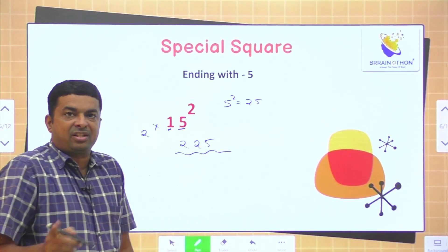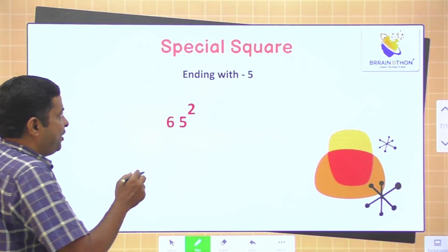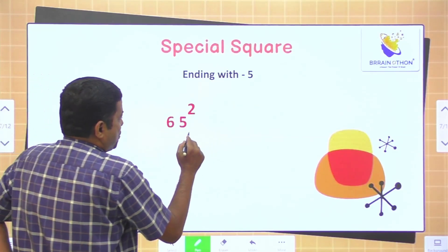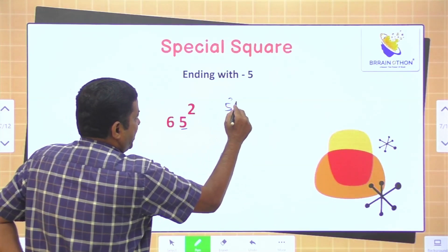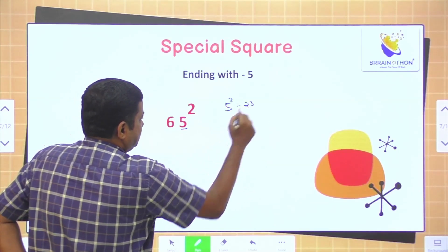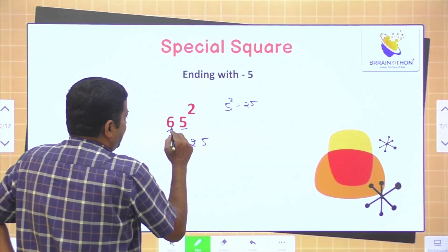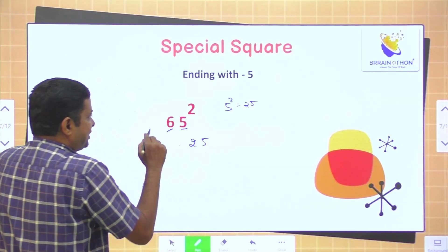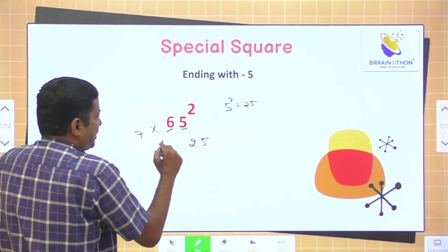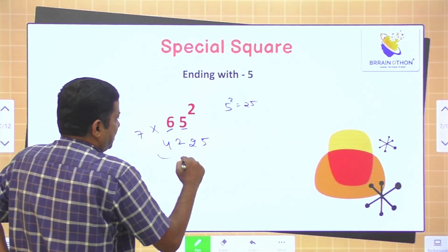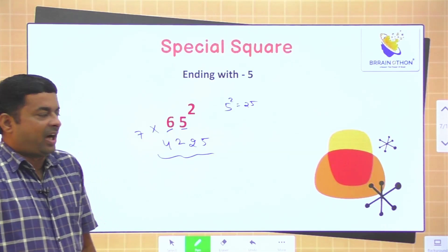This is how fast you can find a square. We have one more sum: 65 square. This number ends at 5, so 5 square is 25, write 25. You need to multiply 6 with its next number, 7. 6 into 7 is 42. This is our final answer: 4225.